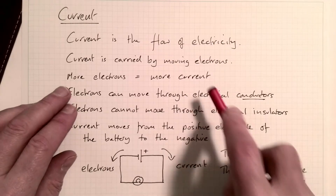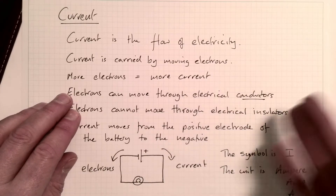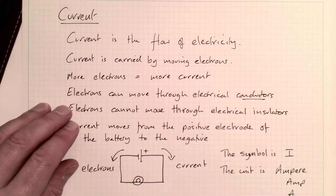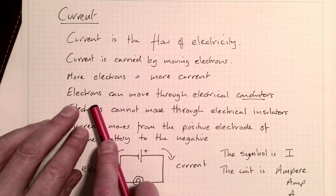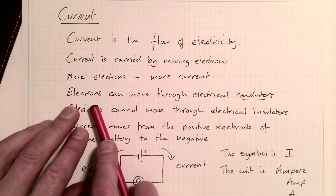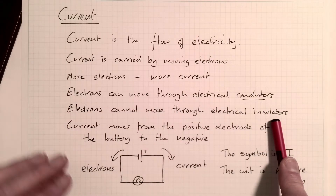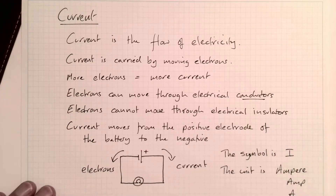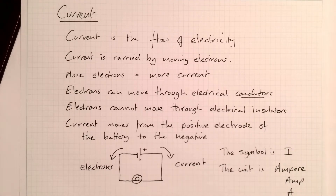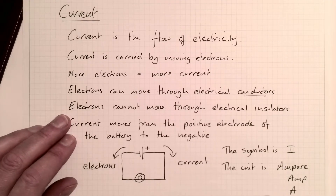So it's a rate — the measurement of current is a rate; it's electrons per second, essentially an amount. The electrons can move through conductors but they cannot move through insulators. We're going to test this in our next experiment with our circuit — we're going to build a circuit that can test the conductivity of different materials.